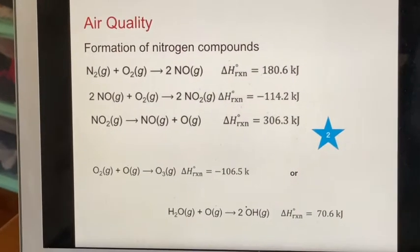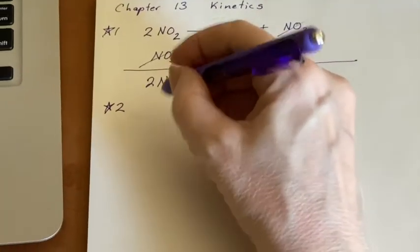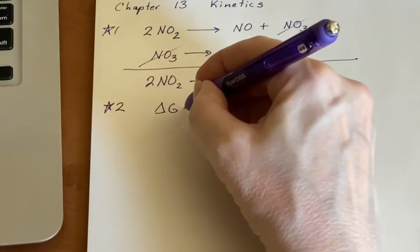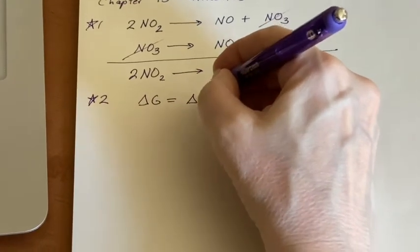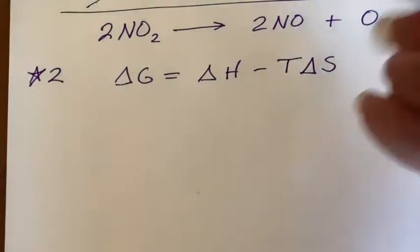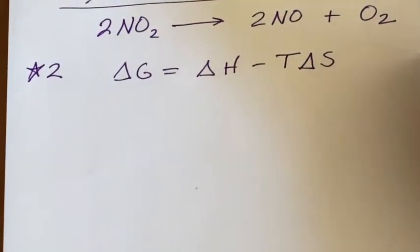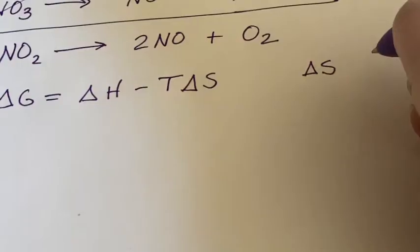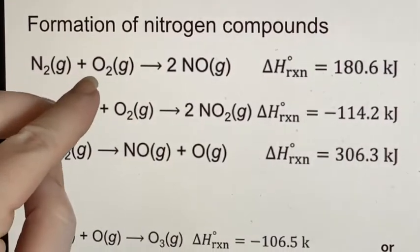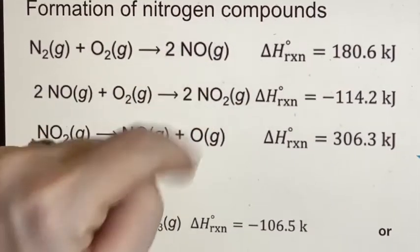So if we look at that first one using what we know, we can see this would fit into the delta G equals delta H minus T delta S that we learned about in the last chapter. We can see that the delta S is not going to be very big because that's a gas and that's a gas, that's two gases and this is two gases.